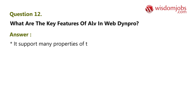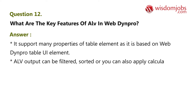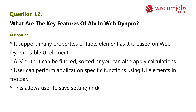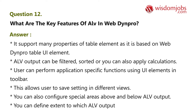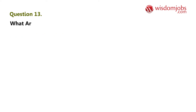Question 12: What are the key features of ALV in WebDynpro? Answer: It supports many properties of the table element as it is based on the WebDynpro table UI element; ALV output can be filtered and sorted; you can also apply calculations; users can perform application-specific functions using UI elements in the toolbar; it allows users to save settings in different views; you can configure special areas above and below ALV output; and you can define the extent to which ALV output can be edited.